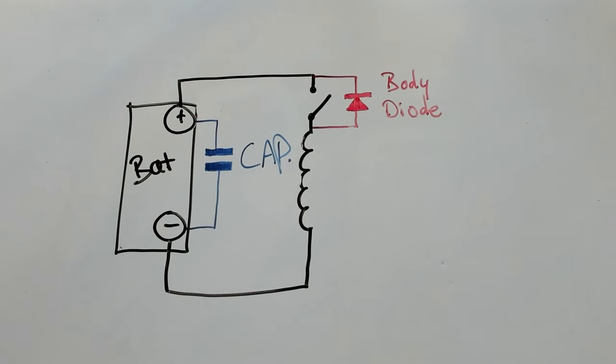By adding a parallel capacitor to the battery we make it even more efficient. The impulses first charge up the fast capacitor and then the capacitor charges up the slower battery. The result is a very efficient method for producing negative voltage impulses. So that is the basics.